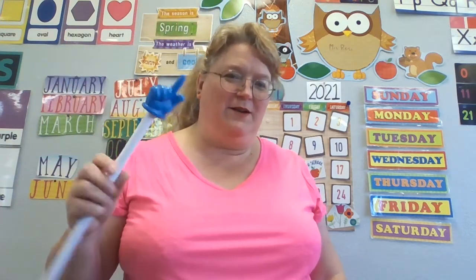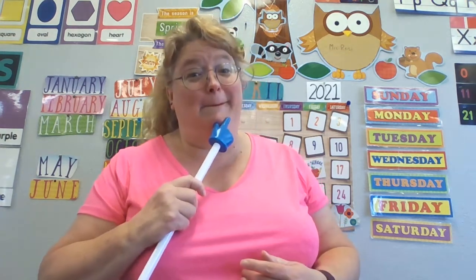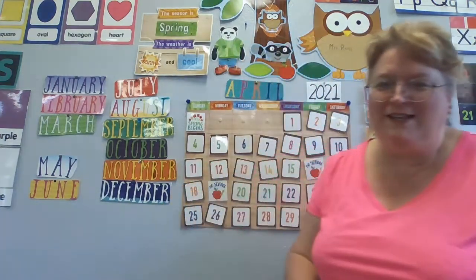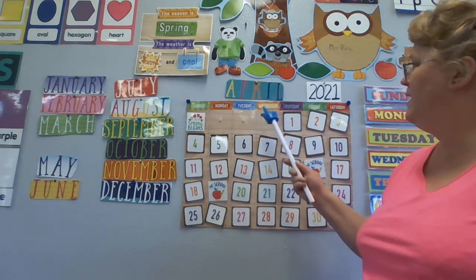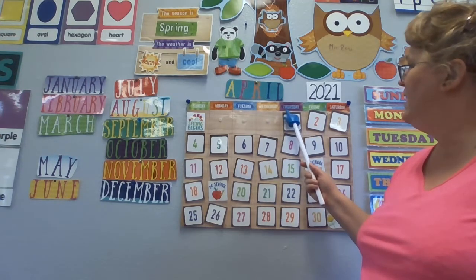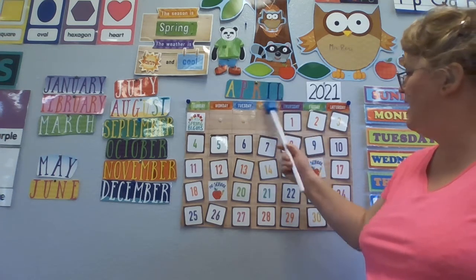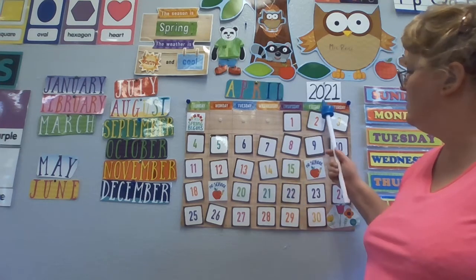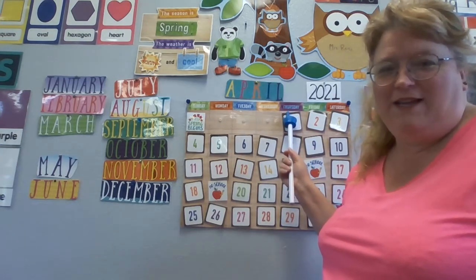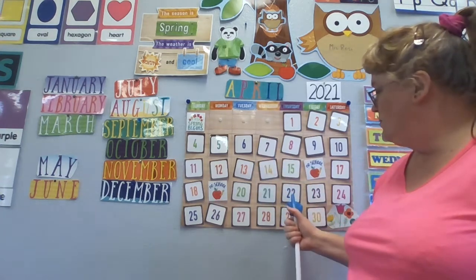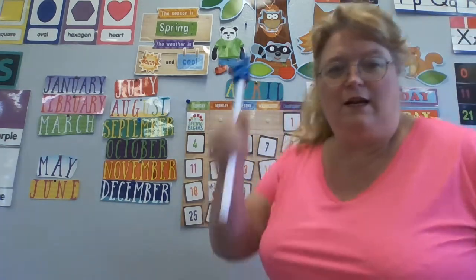What time is it? What time is it? Who knows? Who can tell me? It's calendar time! All right, let me see. Yesterday was Wednesday. Today is Thursday and tomorrow will be Friday. So today is Thursday, April 22nd, 2021. Thursday is the day of the week. April is the month of the year. The 22nd is the date. And 2021 is the year.